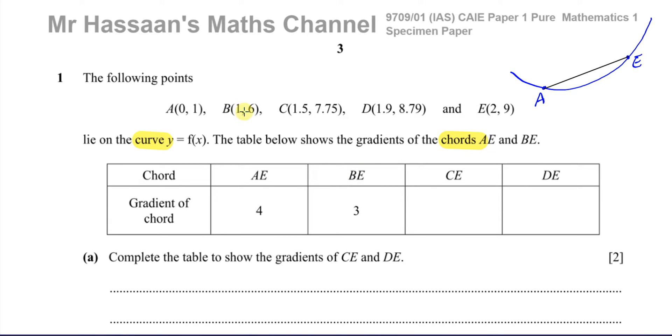It says AE is 4 and A is (0,1) and E is (2,9) and BE is 3 and B is (1,6) and E is (2,9). So B is getting closer to E and the gradient is getting less. As B is getting closer to E, then the gradient of the curve is getting less. That was 4 and this is 3. So we can see that this is the gradient between the point A and E and this is the gradient between the point B and E.